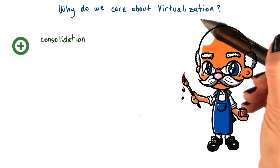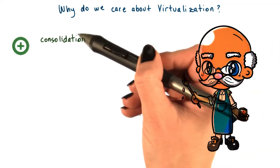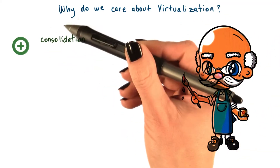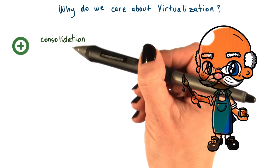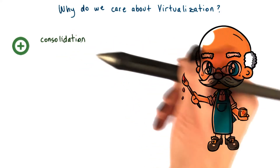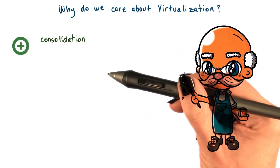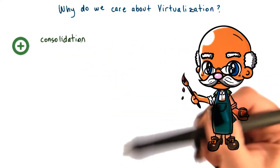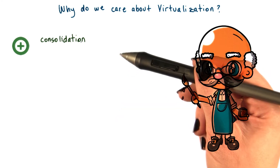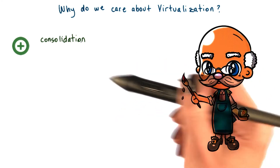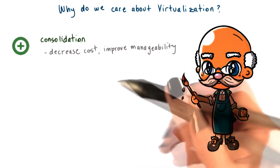So why do we care about virtualization? Well, first, it enables consolidation. Consolidation is this ability to run multiple virtual machines with their operating systems and applications on a single physical platform.